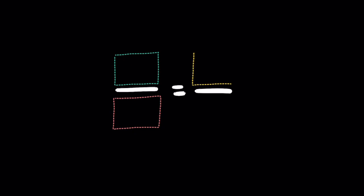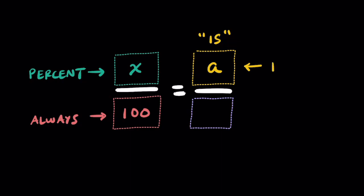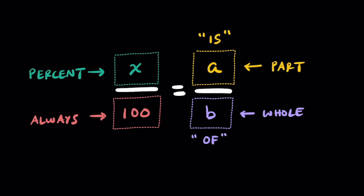Hopefully tying this all together — there are really four parts to every proportion. On one of the tops, you'll always have the variable x representing our percent, and it's always on top of 100; that never changes. The other numerator will always be the variable a — look for the keyword 'is' to help find it, and it represents the part. Underneath a, you'll have the variable b — look for the keyword 'of' to help find it — and this always represents the whole. In all percent proportion problems, you'll be solving for x, a, or b. That wraps up this video on solving percent proportion problems.